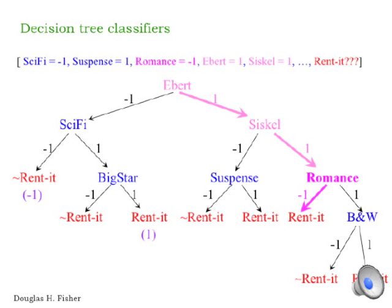At the romance node, we find that it's not a romance movie. After taking the left branch of the romance node, we reach a leaf that indicates that we should rent the movie.